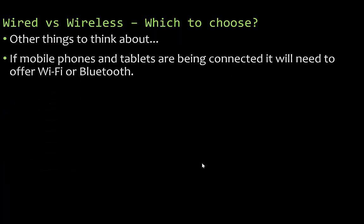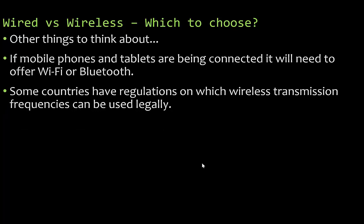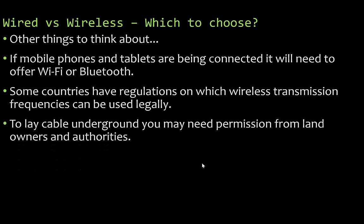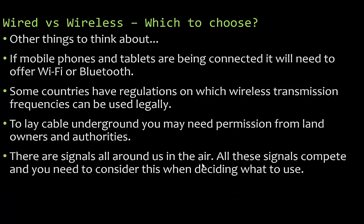Other things to consider: if mobile phones and tablets are being connected it will need to offer Wi-Fi or Bluetooth. Some countries have regulations on which wireless transmission frequencies can be used legally, and these vary by country. To lay cable underground you may need permission from landowners and authorities. Also, signals all around us in the air compete, and you need to consider this — especially if you're in charge of a business.